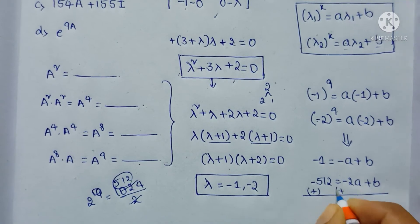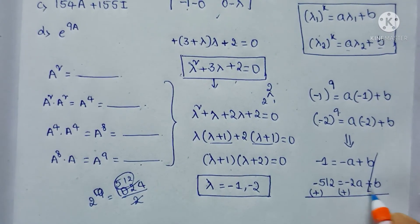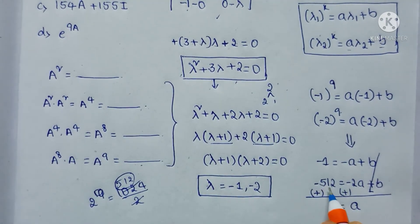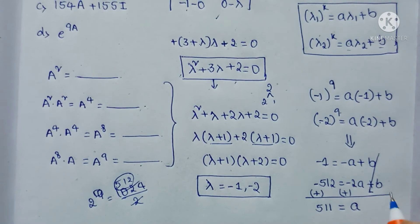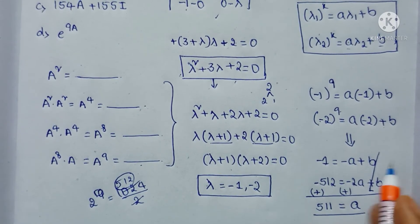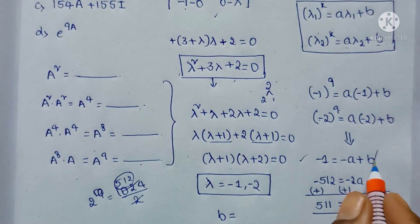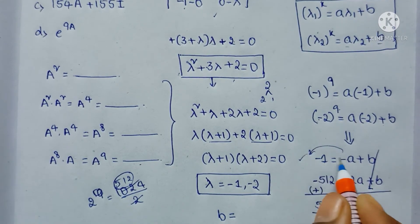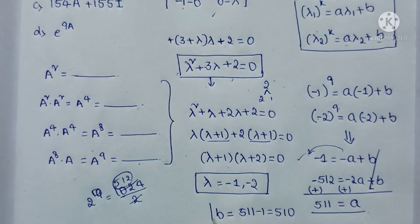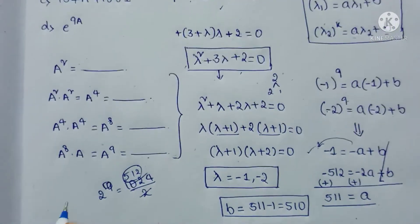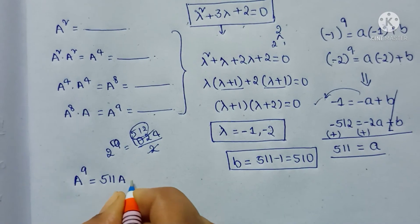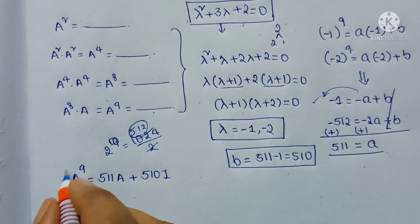Subtracting the first equation from the second, the b terms cancel and we get a equals 512 minus 1 equals 511. Substituting a equals 511 back, we get b equals 511 minus 1 equals 510. Therefore A power 9 equals 511 times A plus 510 times I.